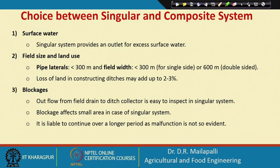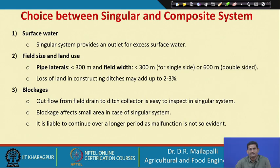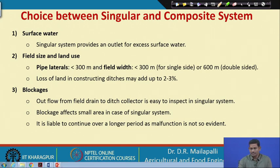In a singular system, the laterals are directly connected to an open ditch, whereas in a composite system the laterals or field tile drains are connected to a main pipe, which then is exposed to the open ditch or any watercourse. Regarding surface water, the singular system provides an outlet for excess surface water.